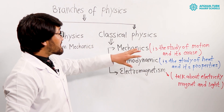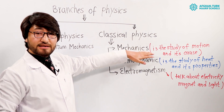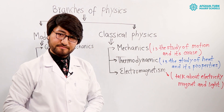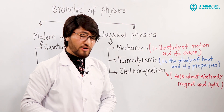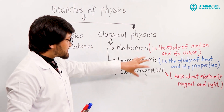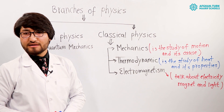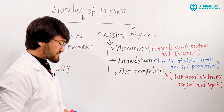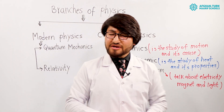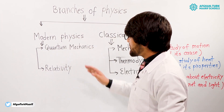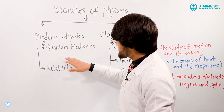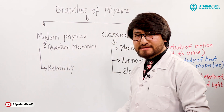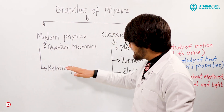Now you understand what is mechanics, what is thermodynamics, what is electromagnetism. You understood the three parts of classical physics. Now, coming to modern physics: modern physics is divided in two parts — quantum mechanics and relativity.